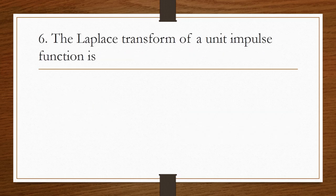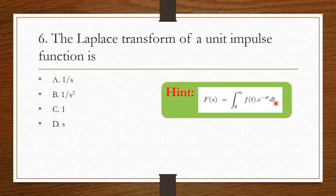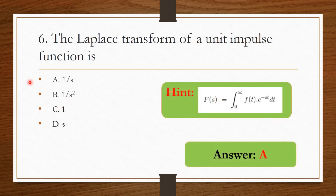The Laplace transform of the unit impulse function — unit impulse function means δ(t). If we take the Laplace transform using the standard formula, the answer is 1. So option A is the right answer.